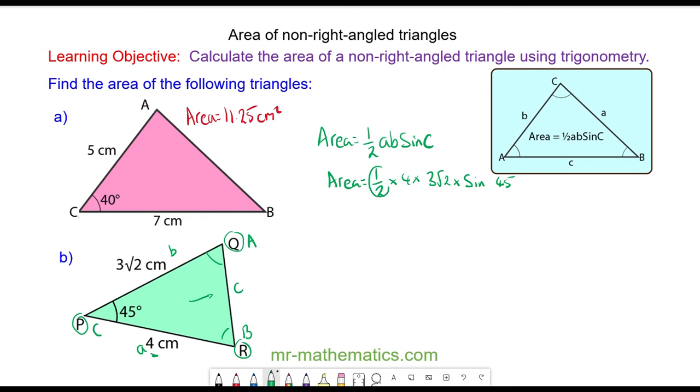We can work out one half of 4, which is 2. So the area is equal to 2 multiplied by 3 root 2 multiplied by the sine of 45. And 2 lots of 3 root 2 is 6 root 2 multiplied by the sine of 45.